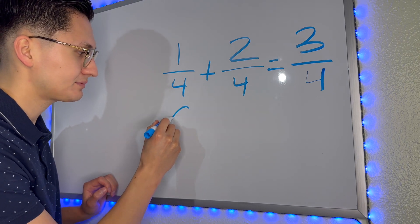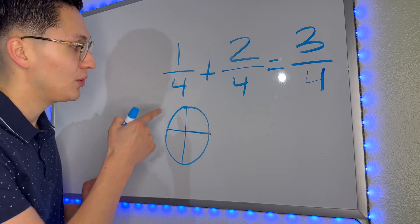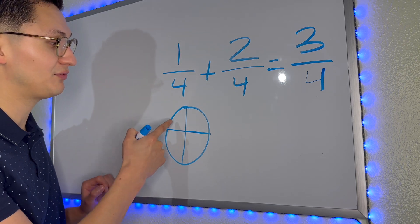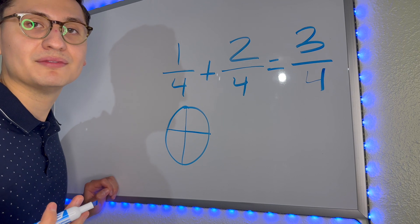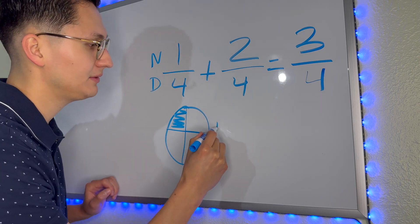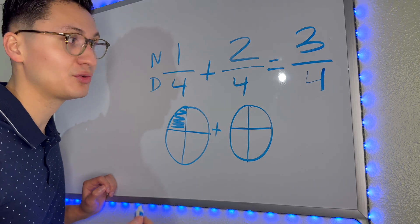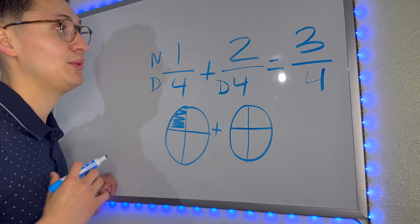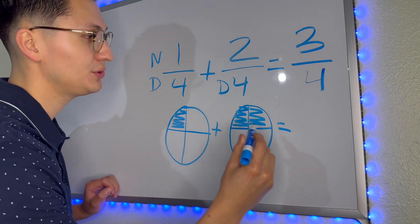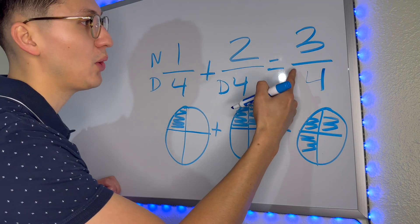Now let's look at it with a picture. We have a pizza and it's divided into four equal parts. Why do we divide it into four parts? Because we look at the denominator and the denominator tells us so — there are four parts in the pizza. And how many do we have? We have one, because that's what the numerator tells us — one slice of pizza. And we have another whole pizza divided into four parts. Why? Because it tells us in the denominator. And we have two. One plus two is three. So the answer would be three over four — three-fourths.